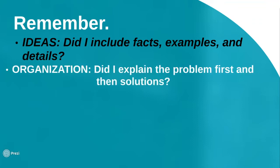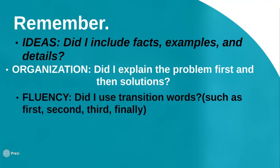Second: Organization — did you explain the problem first and then the solutions? You must follow the correct format: problem first, then solutions, then conclusion. If you write the solution before the problem, that is incorrect. Third: Fluency — did you use transition words? In the body paragraph, when describing two or more solutions, use words like first, second, third, and finally.